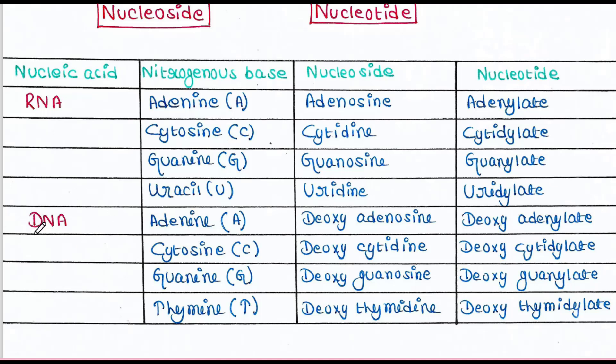In case of DNA, for A, the nucleoside is deoxy adenosine and the nucleotide is deoxy adenylate. The deoxy prefix is attached since it is DNA. For cytosine, the nucleoside is deoxy cytidine and the nucleotide is deoxy cytidylate. For G, the nucleoside is deoxy guanosine and the nucleotide is deoxy guanylate. For T, the nucleoside is deoxy thymidine and the nucleotide is deoxy thymidylate.